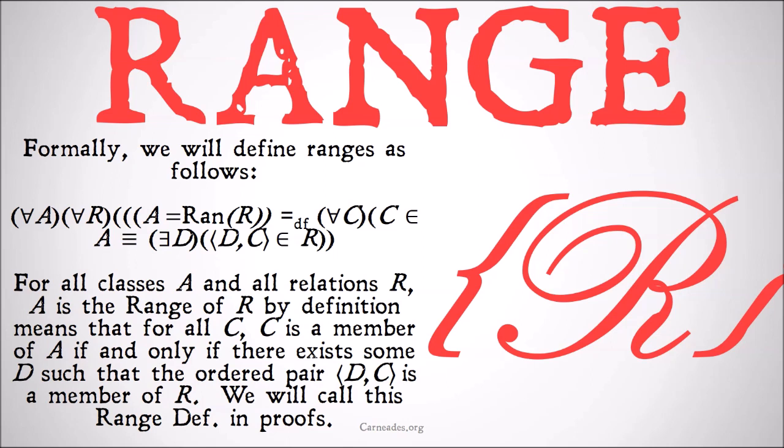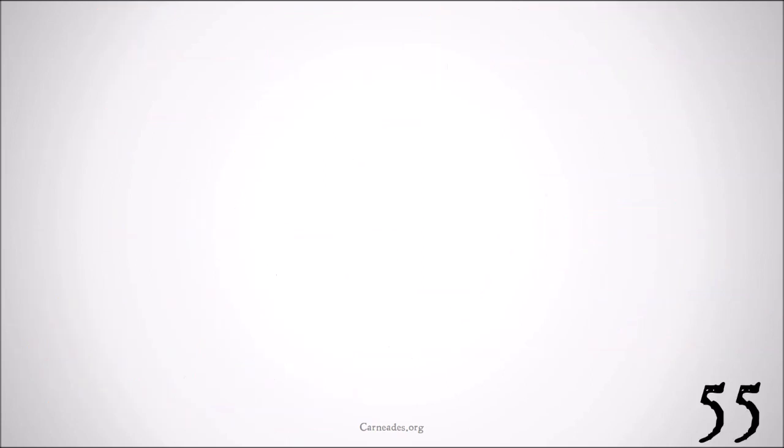For all classes A and all relations R, A is the range of R by definition means that for all C, C is a member of A if and only if there exists some D such that the ordered pair (D, C) is a member of R. We're going to call this range definition in proofs.